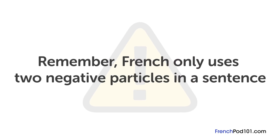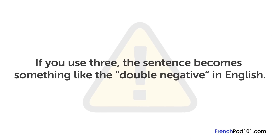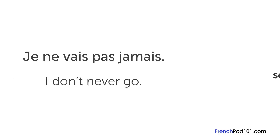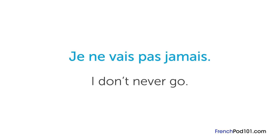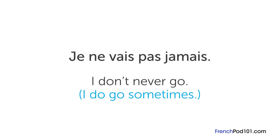Remember, French only uses two negative particles in a sentence. If you use three, the sentence becomes like the double negative in English. For example, if you said Je ne vais pas jamais — meaning 'I don't never go' — then that means you do go sometimes. But it sounds unnatural.